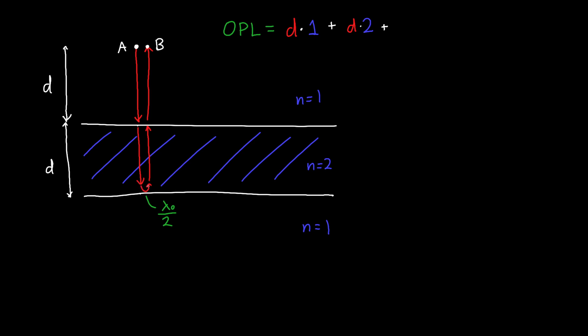Now, once it reflects off of this back interface, because we're going from a high index to a low index, and we're at normal incidence. In other words, we're hitting the thing straight on. Then we also pick up a lambda naught over 2. This is the phase shift that we get at this interface. Finally, we need to go back from the bottom interface to the top interface. So that's a distance D and our refractive index is 2. And we need to go from the top interface back to point B. So that's another distance D and the refractive index is 1.